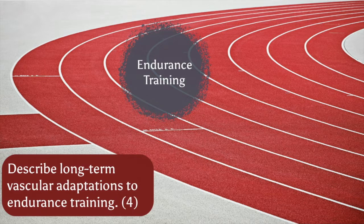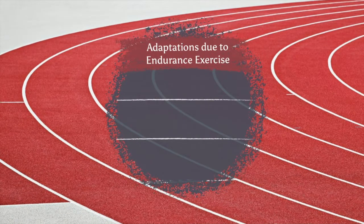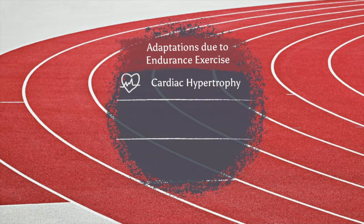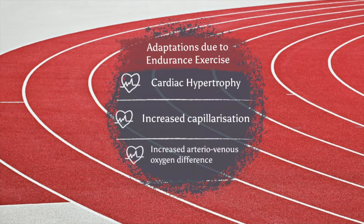There are a number of adaptations that occur as a result of endurance training, but they can be summarized as three main adaptations: first, cardiac hypertrophy, where the heart muscle gets bigger; increased capillarization, where the number of capillaries in the working muscles and in the lungs increases; and an increased arteriovenous oxygen difference.